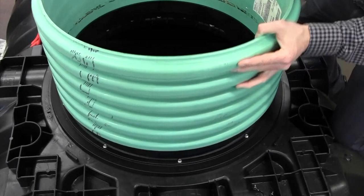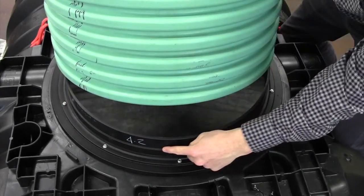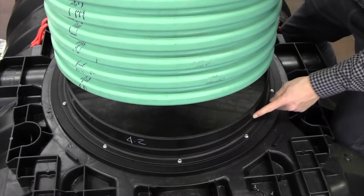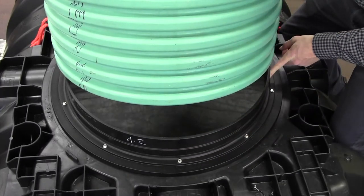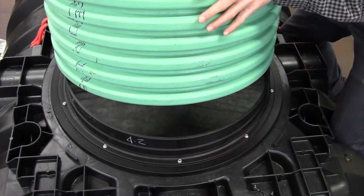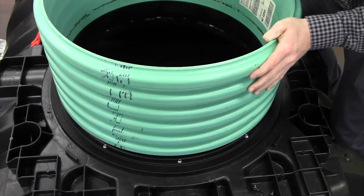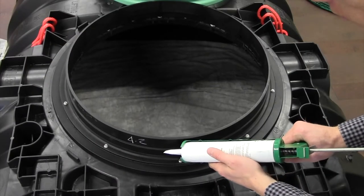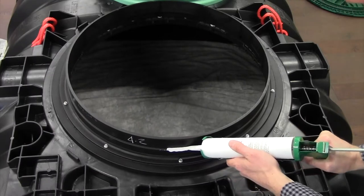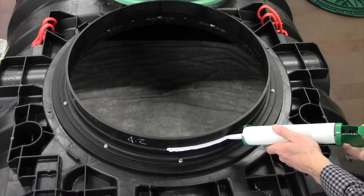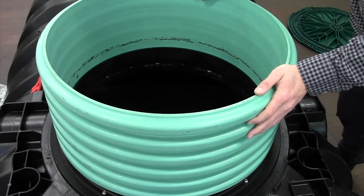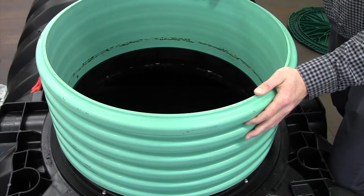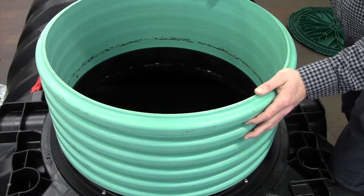The next step is to apply a generous bead of sealant to the first taper on the pipe adapter, around the complete outside of the tapered section. Once you've applied your sealant, place your ultra-rib or IPEX pipe onto the pipe adapter ring until it sits flush on that raised taper.